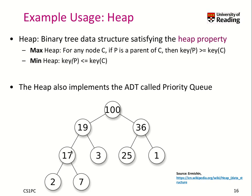Let's see if this is satisfied. For any node C, if P is a parent, then the key of the parent must be bigger than the key of the child. This is 17 and this is 19, so the parent is bigger. So now this node is another node C, and the parent of this node must be bigger — it's 100, so it's bigger. That is how it works.